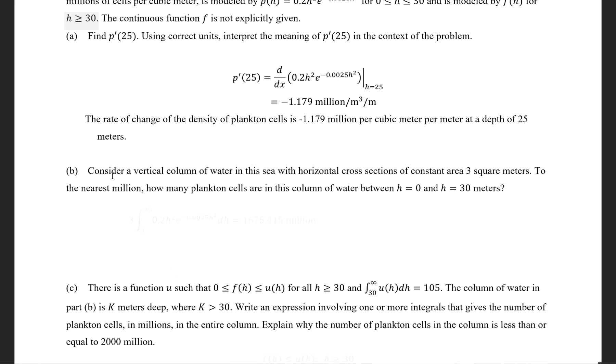Next, consider a vertical column of water in the sea with a horizontal cross-section of a constant area 3 square meters. So the basic form is you've got the integral of the pH function. But because the horizontal cross-section is 3 square meters, you've got to multiply it by 3 in order to actually account for the whole column width.